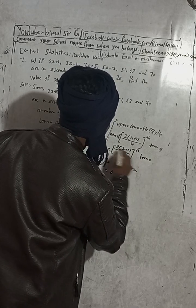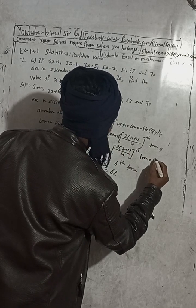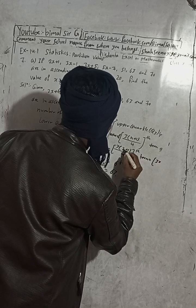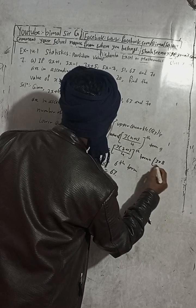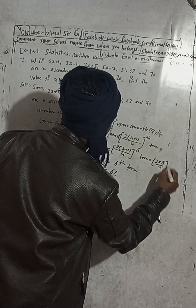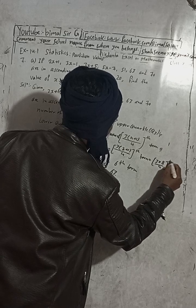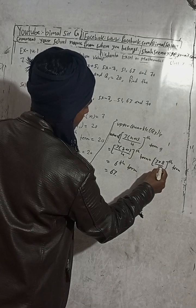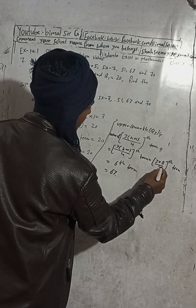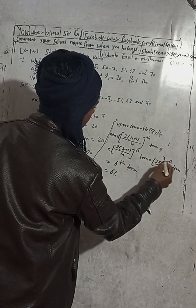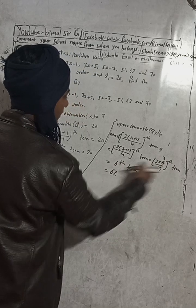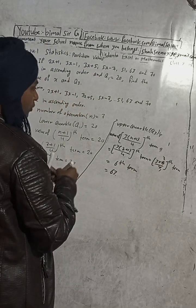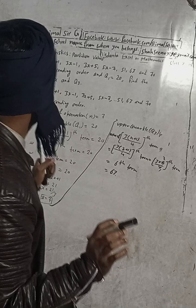Alternatively, computing directly: 3 into (7+1)/4 equals 3 into 8/4 equals 3 into 2 equals 6. So again we get the 6th term. Whether you compute it this way or the previous way, you get the same answer — the 6th term is 63.